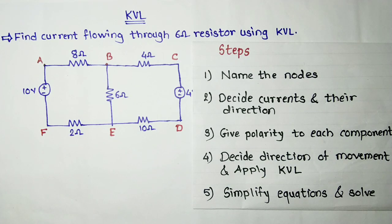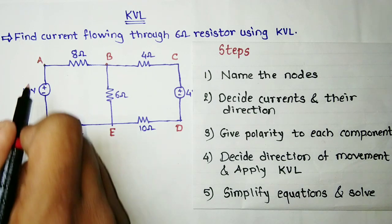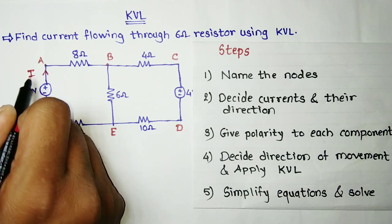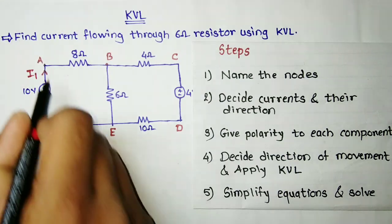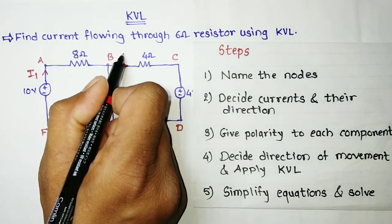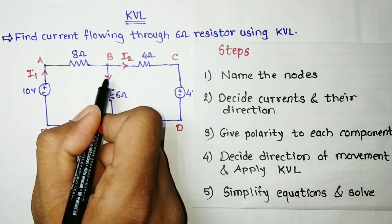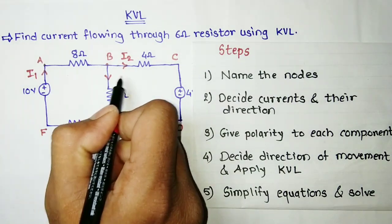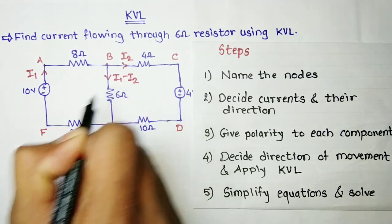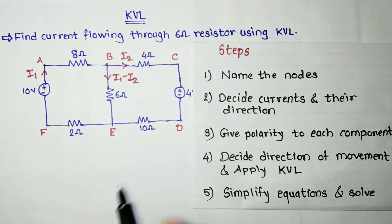We have given names to the nodes. Now decide the currents and their direction. We will assume: let the current flowing through the 10-volt supply be I1. I1 will come to point B and get distributed — let this current be I2, and therefore the remaining current will be I1 minus I2.